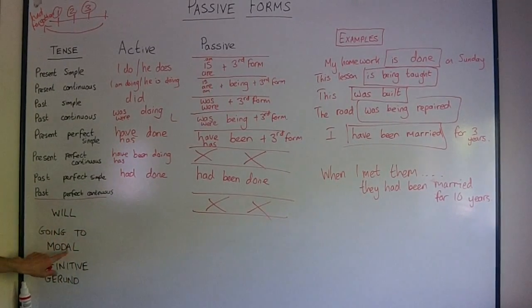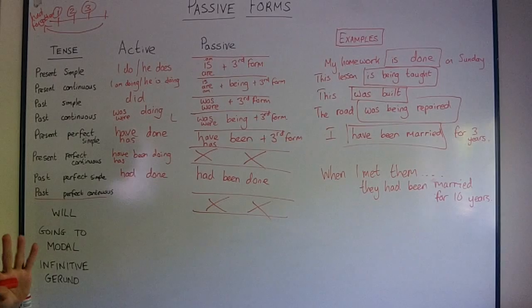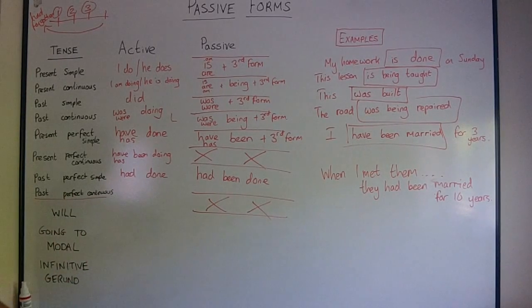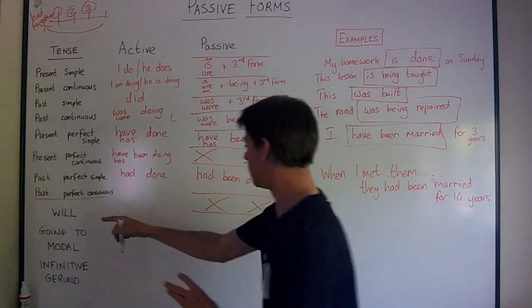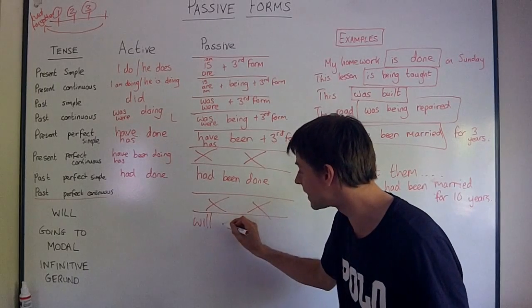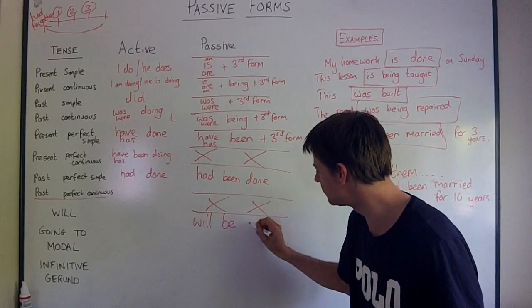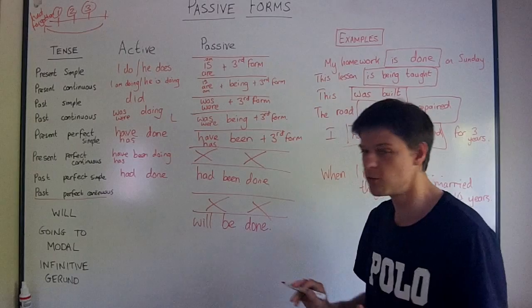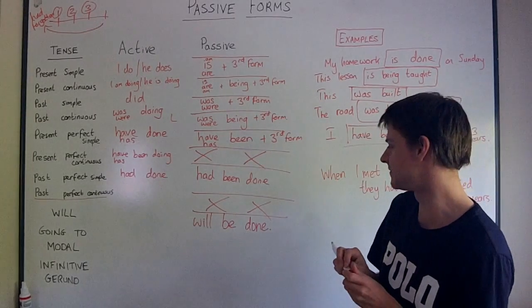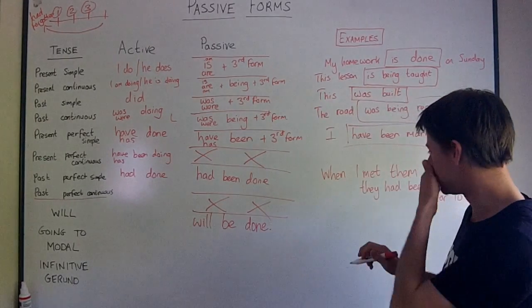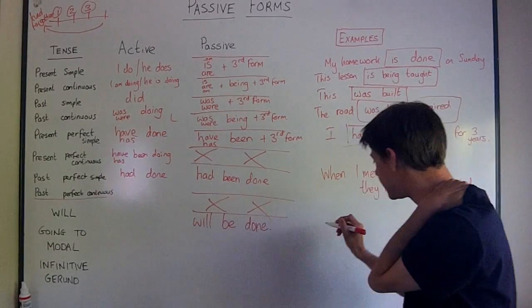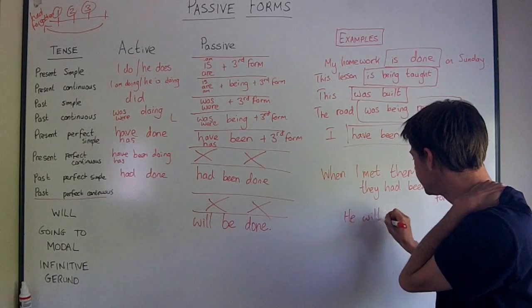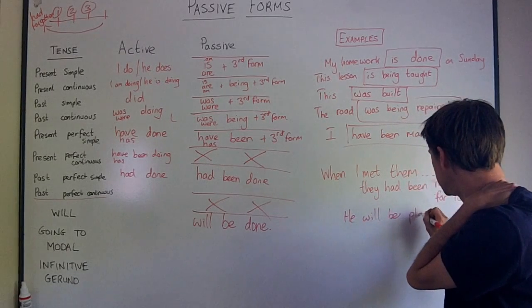Now on to will. Will is a modal verb. Maybe some of you know this. Maybe some of you don't. Will is actually a modal verb. You can't say he wills, she wills, and there is no infinitive. So will, we use will. Will is always plus infinitive. Will be and the third form. Will be done. My homework will be done later. Something like this, or he will be pleased.